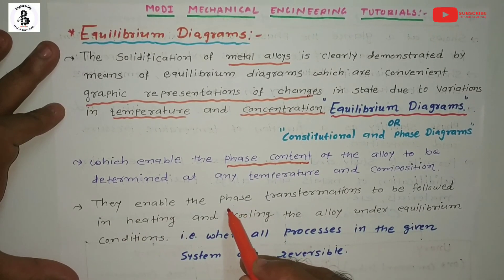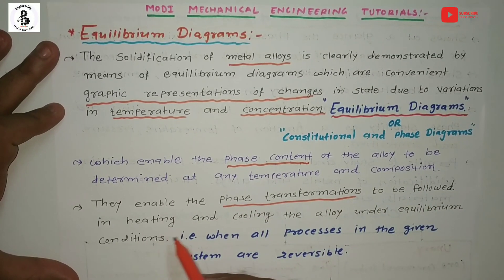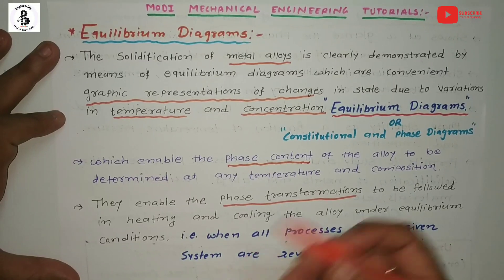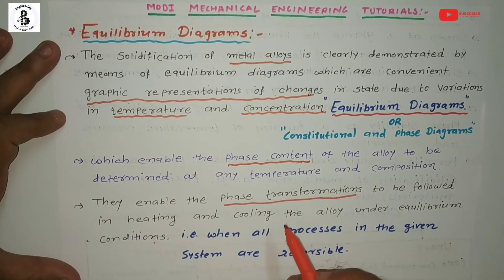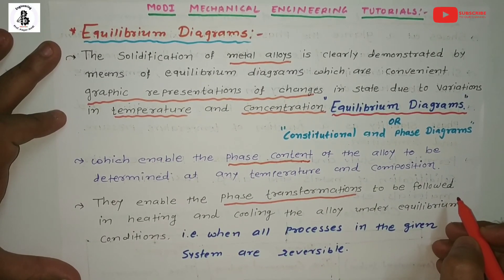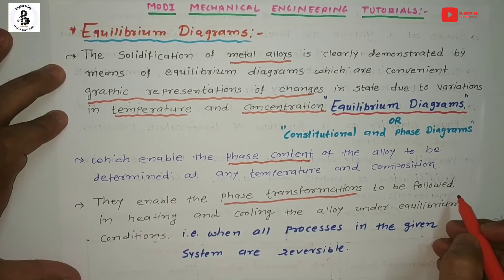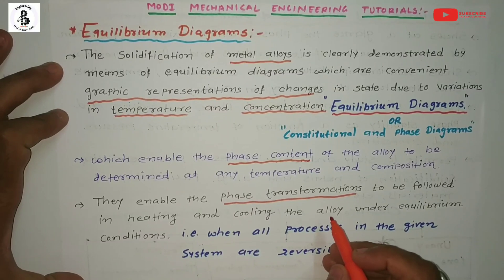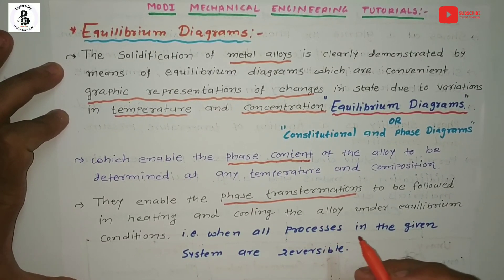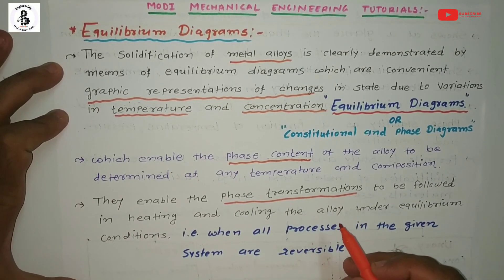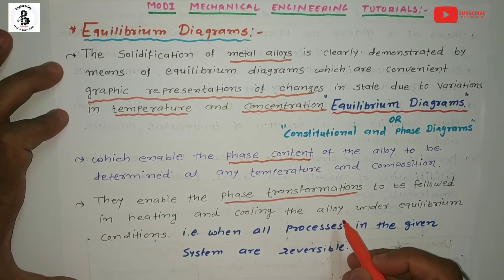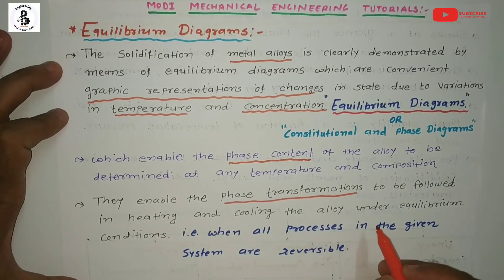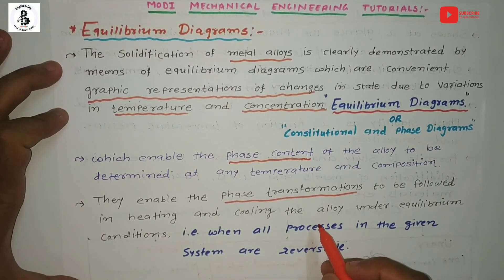Equilibrium diagrams enable phase transformations to be followed during heating and cooling of an alloy under equilibrium conditions. Below the melting point of both alloying materials, the material is always in liquid form. In the liquid state of an alloy there is 100% solubility, forming a single-phase liquid. By cooling, that liquid transforms into solids, and according to solubility, different kinds of solid materials are formed.